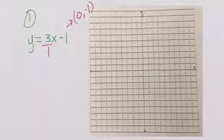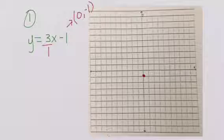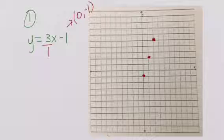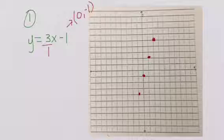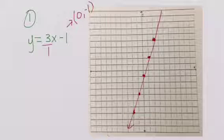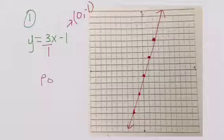Now we're going to graph our y-intercept. We go to zero, negative 1 — that's our first point. Using our slope, we go up three to the right one to get our second point, and up three to the right one again for our third point. Then we go back to our starting point and do just the opposite: down three to the left one, and down three to the left one. That gives us five ordered pairs. We connect the dots with a ruler, draw our arrows, and this graph has a positive slope.